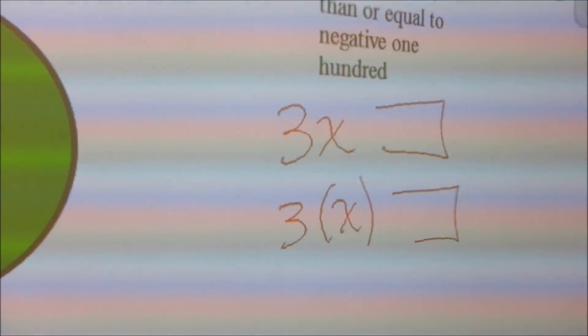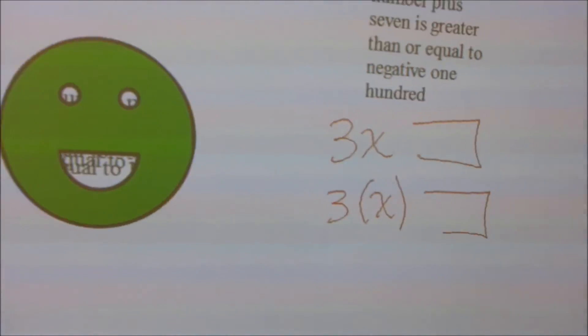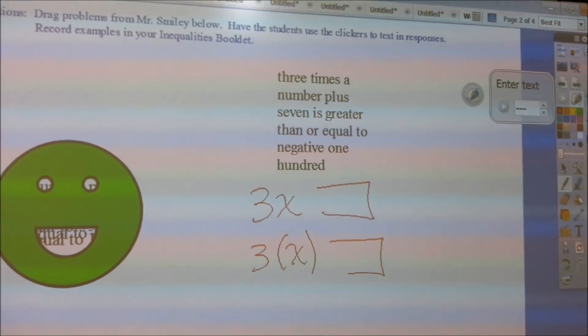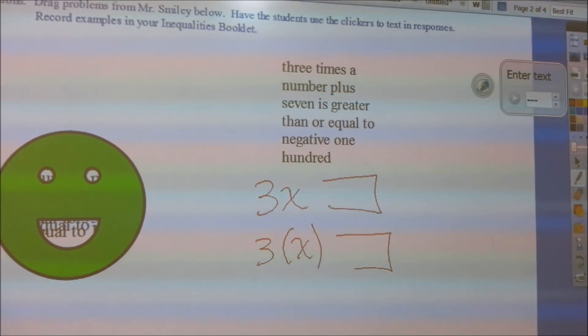It'll make it look like one is right and one is wrong, so build in some parameters with that. But that's just the basics on how to use the clicker system here with those Active Expression 2 clickers.